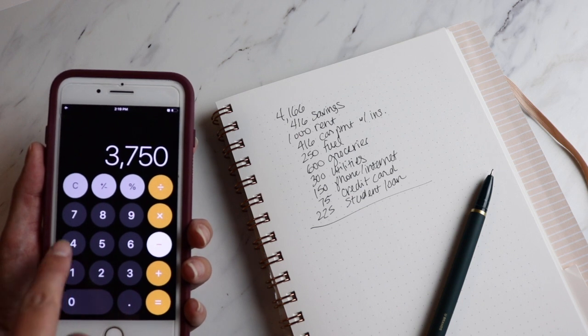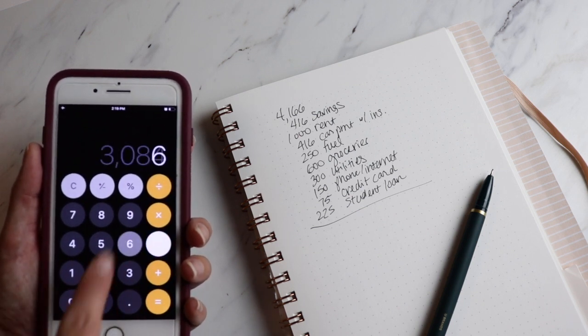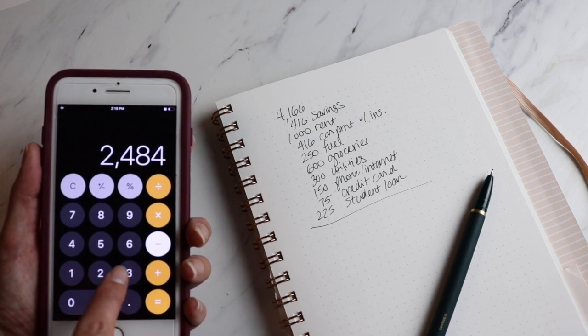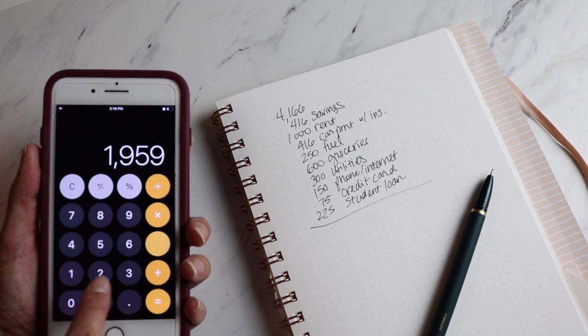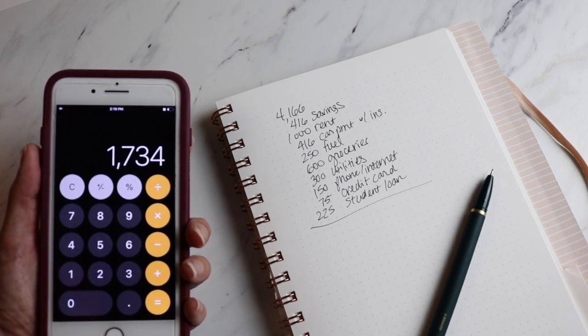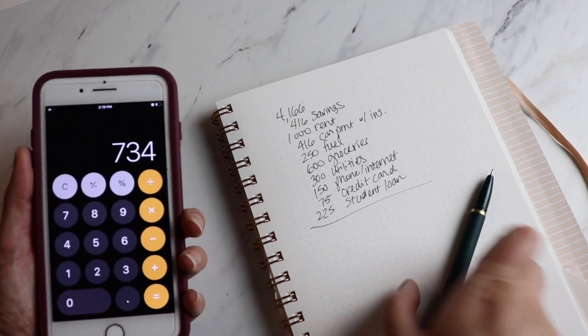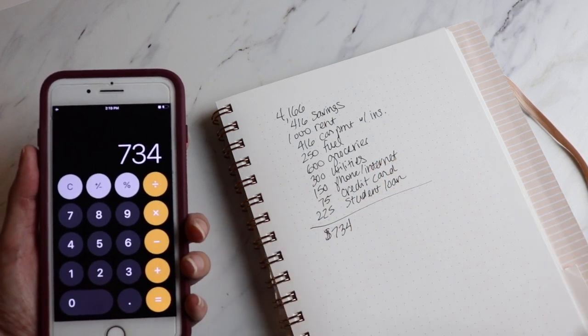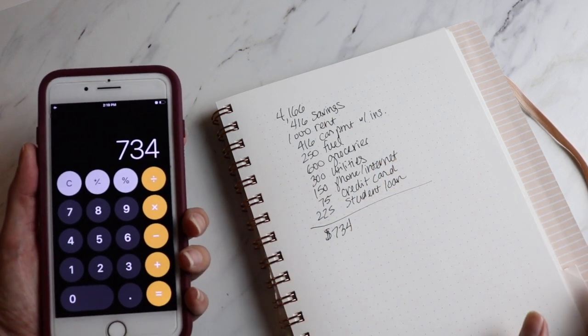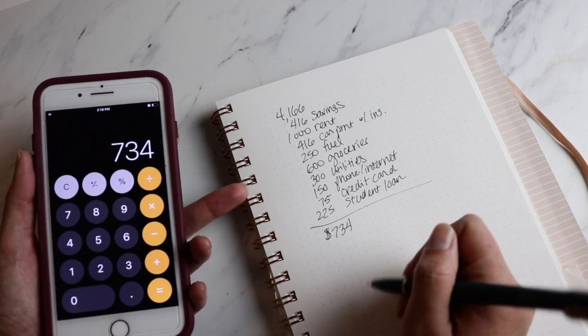So we're going to subtract out the rent, we're going to take out our other car expenses, all of these bills, just subtract them out. $734 left over after paying the bills and after saving money for yourself.